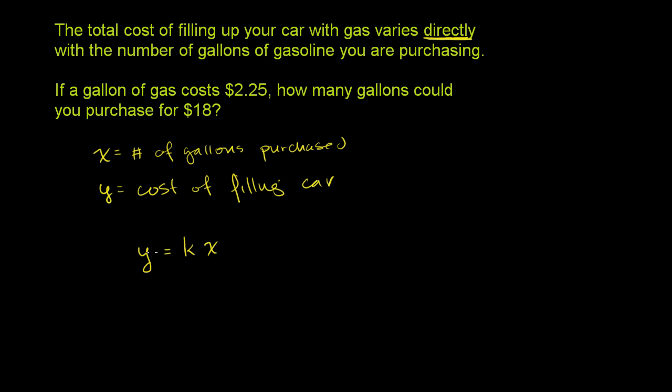If x goes down, y will be down. Now they give us more information, and this will help us figure out what k is. If a gallon of gas costs $2.25, how many gallons could you purchase for $18?